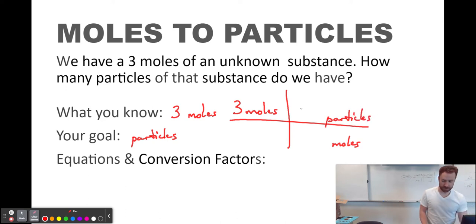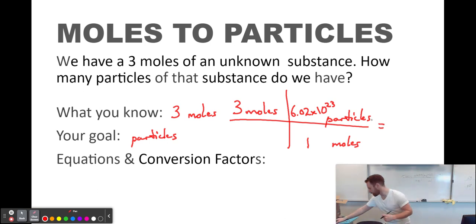And we want to know how many particles we have. So is there a conversion factor we could use or an equivalency that relates moles to particles? Absolutely there is. We just learned it. It's Avogadro's number. It's the mole. One mole is 6.02 times 10 to the 23rd particles.